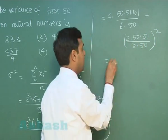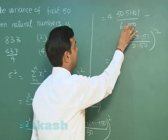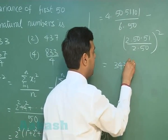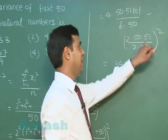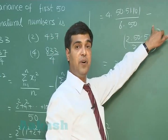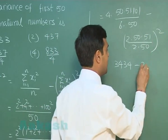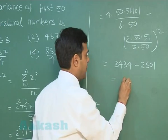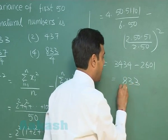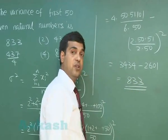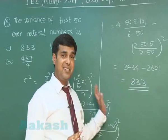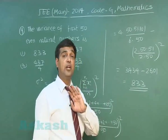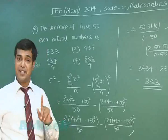On simplifying, cancelling terms, we get 3434 minus 51² = 3434 minus 2601. Subtracting, we obtain the result as 833. The question from stats involves a little bit of calculation, but not a big one.